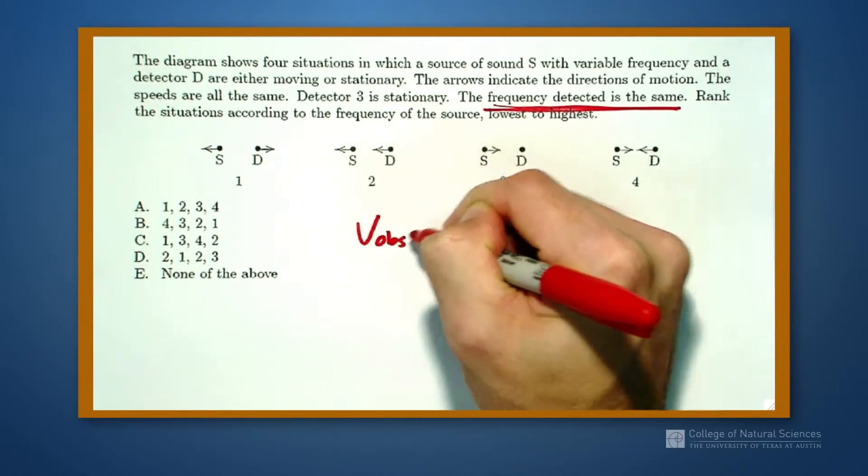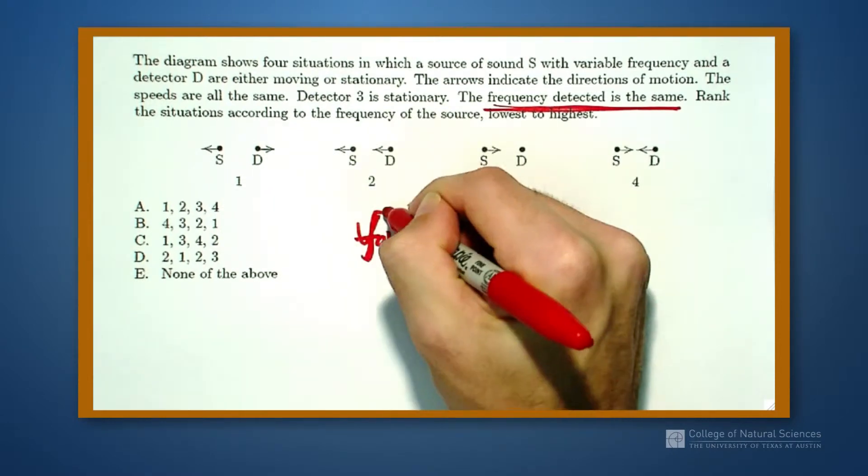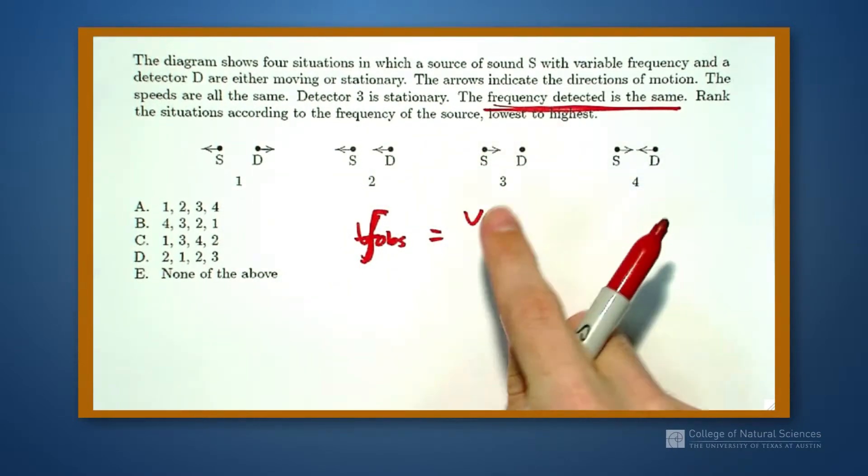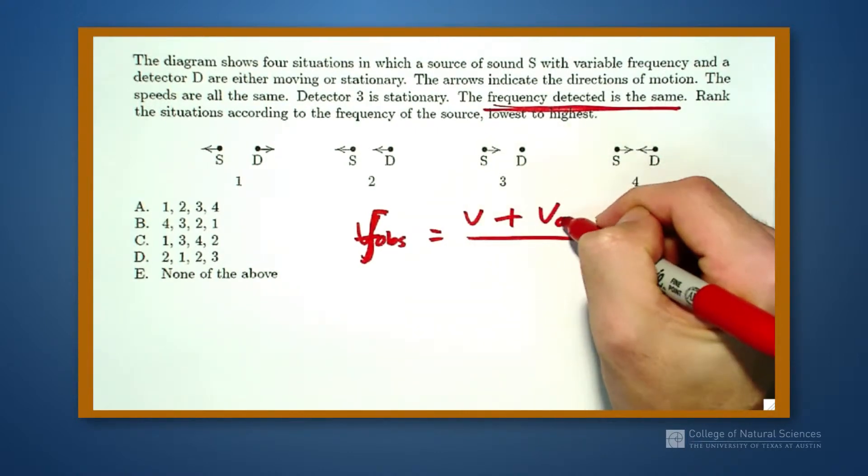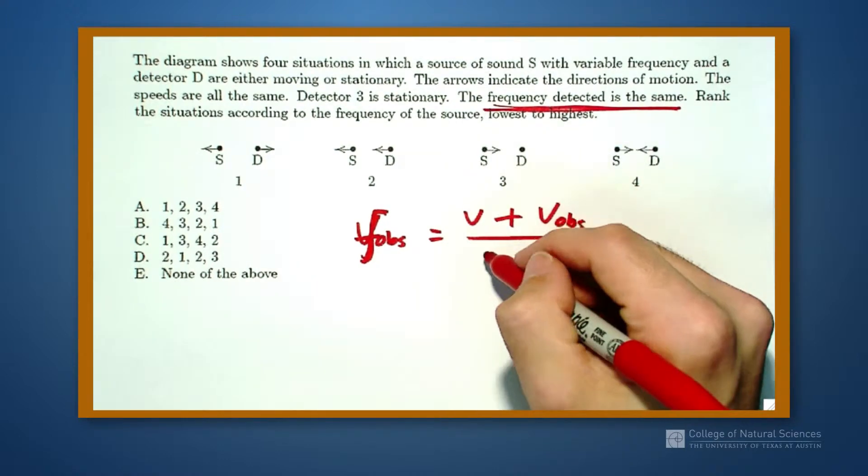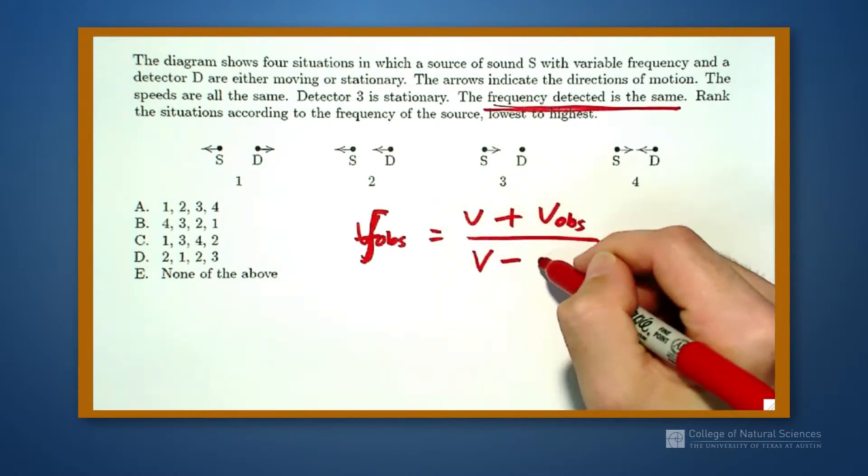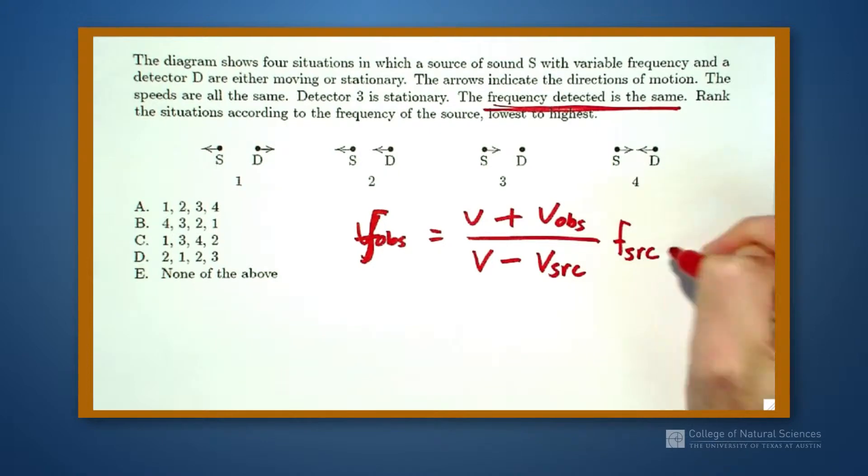So I know that the observed frequency is equal to the velocity of the sound itself plus the velocity of the observer divided by the velocity of the sound minus the velocity of the source, and this is all times the frequency of the source.